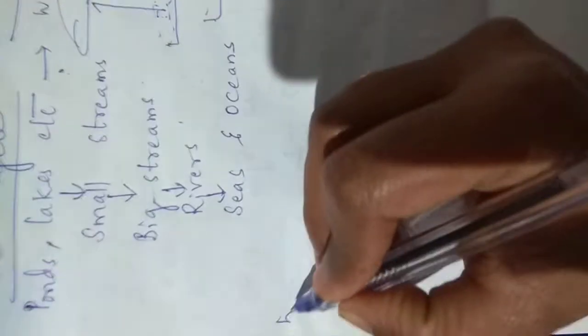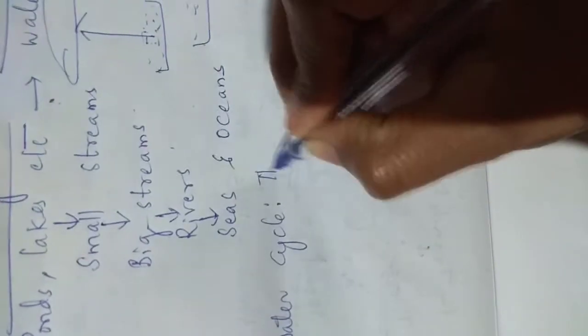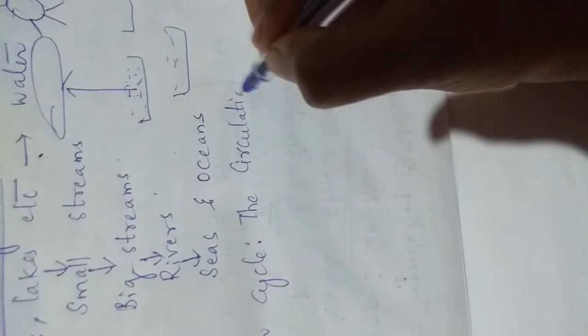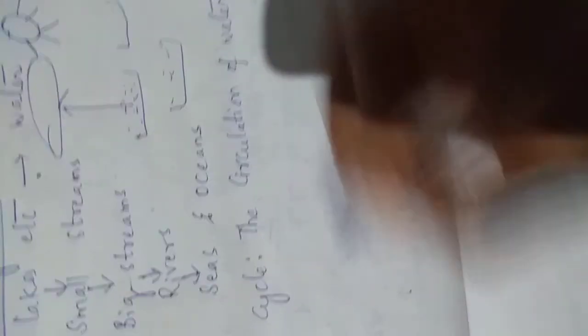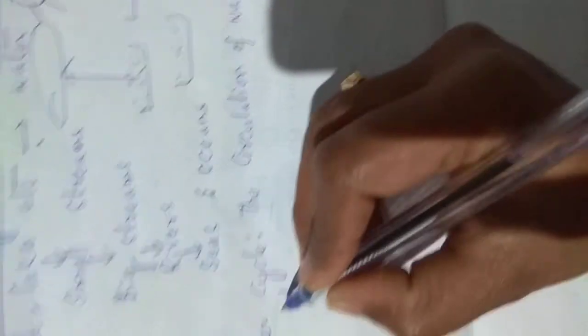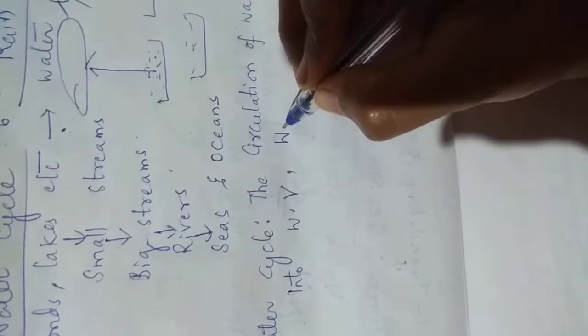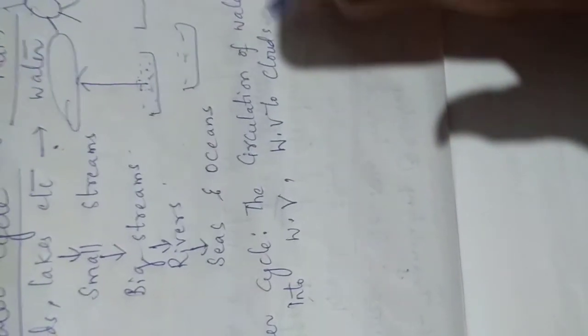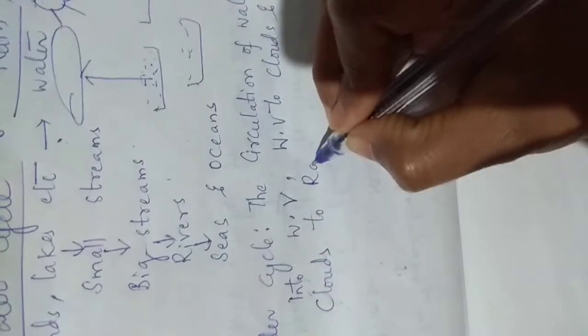Write down the definition of water cycle. Water cycle is nothing but the circulation of water into water vapour, water vapour to clouds, and clouds to rain. This is called water cycle.